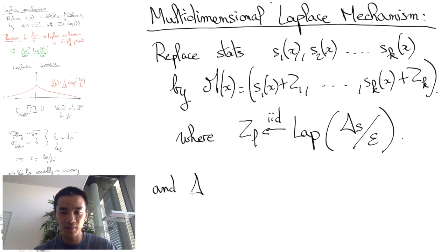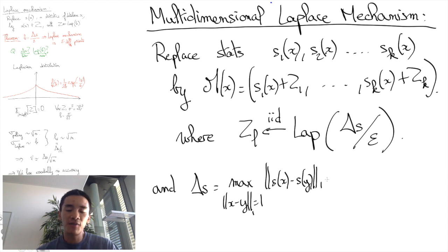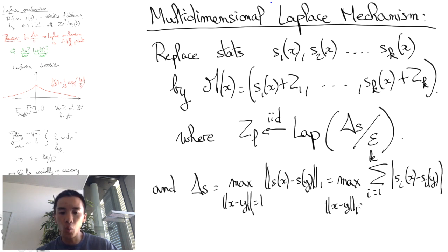Now, delta S has to be redefined here because we are in a multidimensional case, but it will still be the largest variation of S between neighbor databases. For some reasons I'll let you think about, it is useful to consider the L1 norm over R to power K, i.e., we're going to define delta S to be the maximum of the L1 norm between S of X and S of Y, i.e., it is the maximum of the sum of the distance between S of X and S of Y, when X and Y are at distance at most 1.